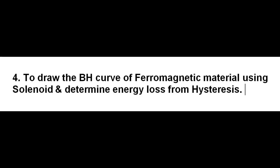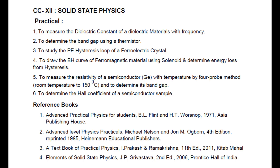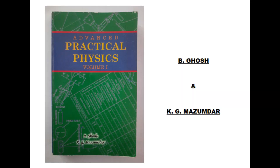This video is all about the practical to draw the B-H curve of a ferromagnetic material using a solenoid and to determine the energy loss from hysteresis, which has been included in the Core Course 12 of Semester 5 of the CBCS Syllabus. For the procedure and the circuit setup of this practical, I have referred to the book Advanced Practical Physics Volume 1 by B. Ghosh and K. G. Majumdar.